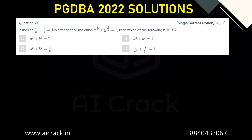Hi everyone. Let's solve question number 39. If the line x/a + y/b = 1 is a tangent to the curve x^(2/3) + y^(2/3) = 1, then which of the following is true?